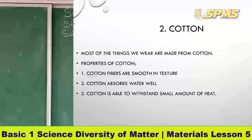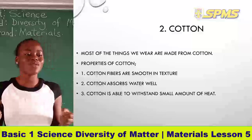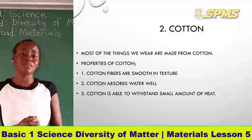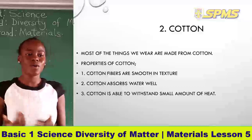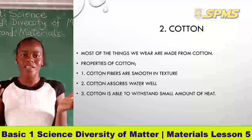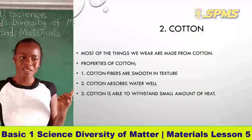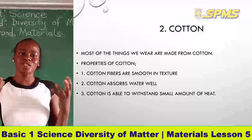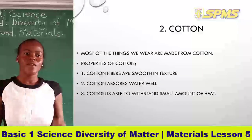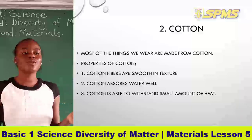Let's move on to our next material, which is cotton. Have you seen cotton before? Most of the things we wear are made from cotton. The properties of cotton are that it is smooth in texture — very smooth and soft. We get jeans, towels, and t-shirts from cotton.